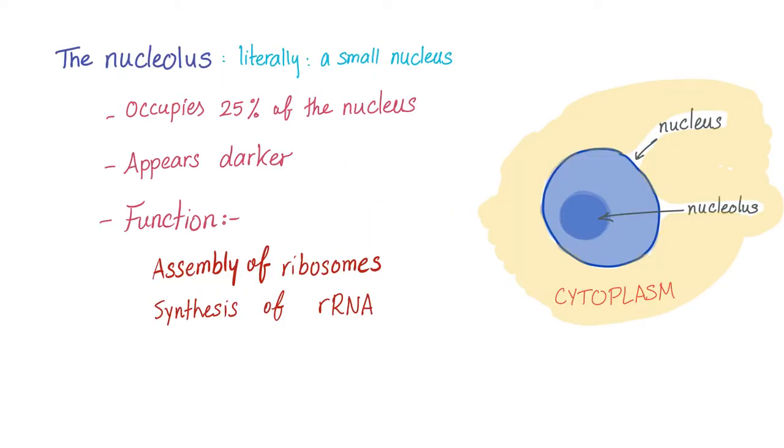Now, let's turn our attention to the nucleolus, literally a small nucleus. It's inside the nucleus, occupying around like quarter of the nucleus, appears darker under microscopy. The function of the nucleolus is assembly of ribosomes to form rRNA, which is ribosomal RNA.